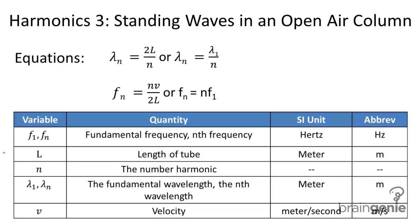Here are the equations we need to know. For the harmonic wavelength is equal to 2 times the length divided by n. And for the harmonic frequency, it's n, the harmonic number, times the velocity of the wave divided by 2 times the length of the tube.